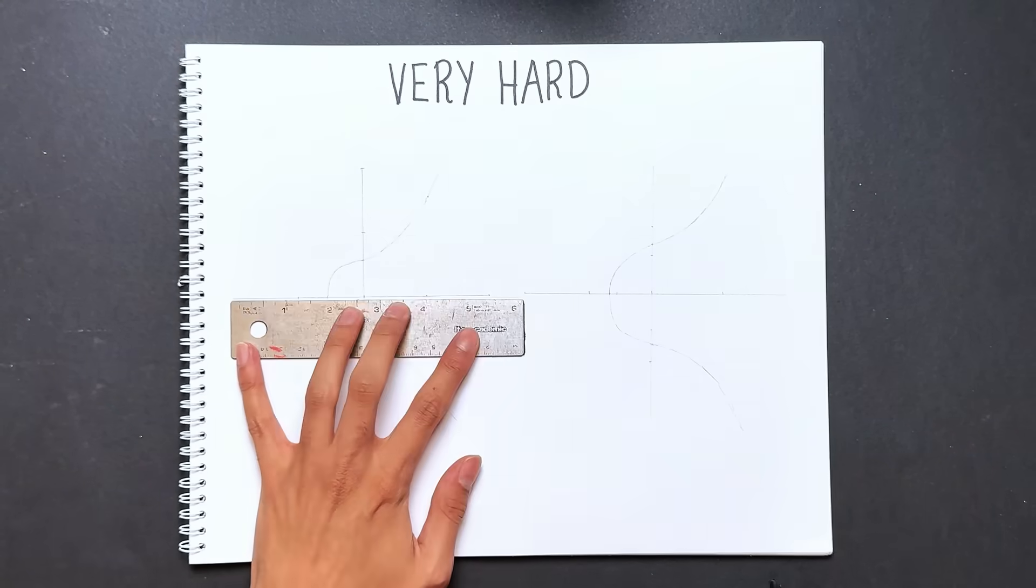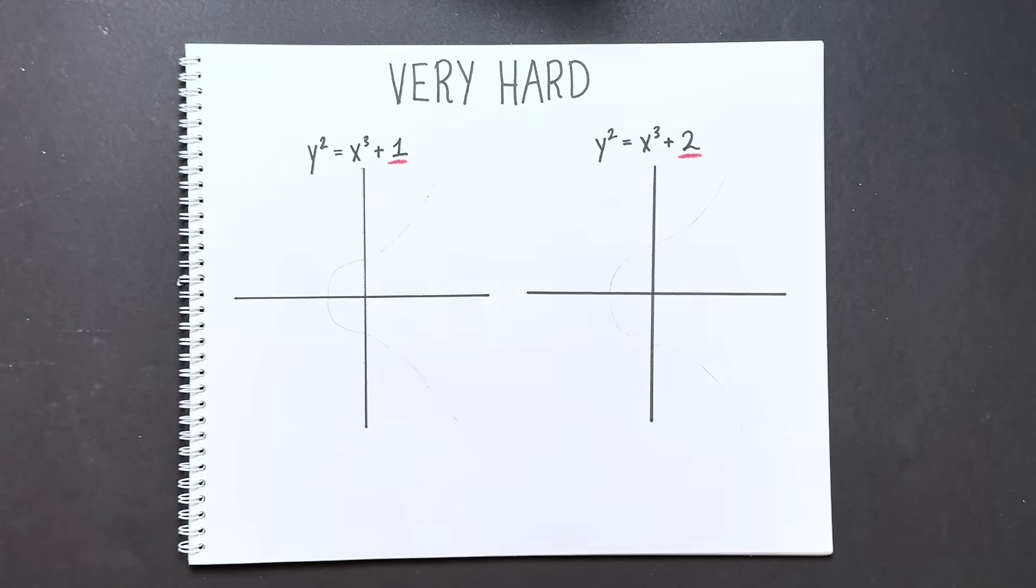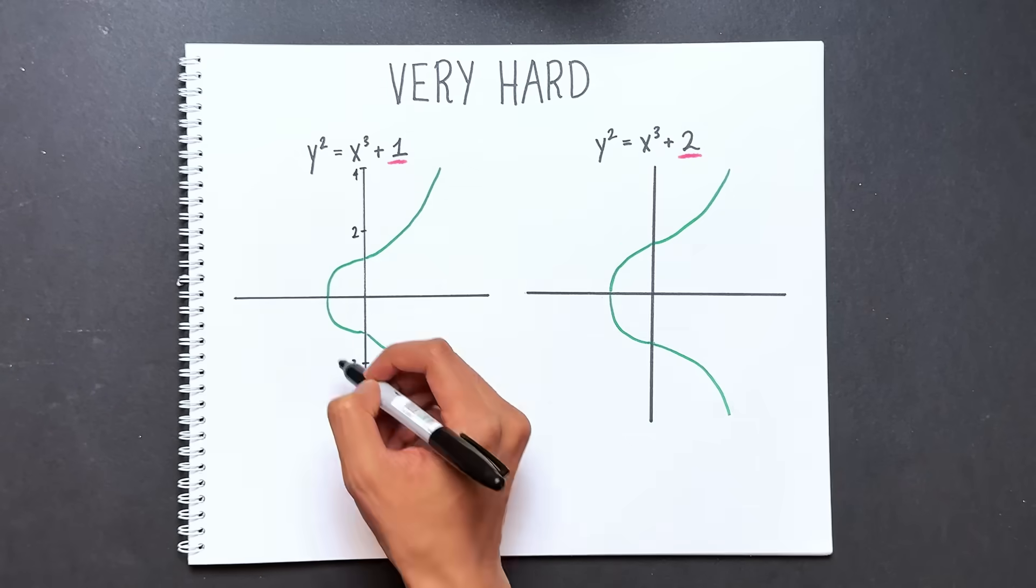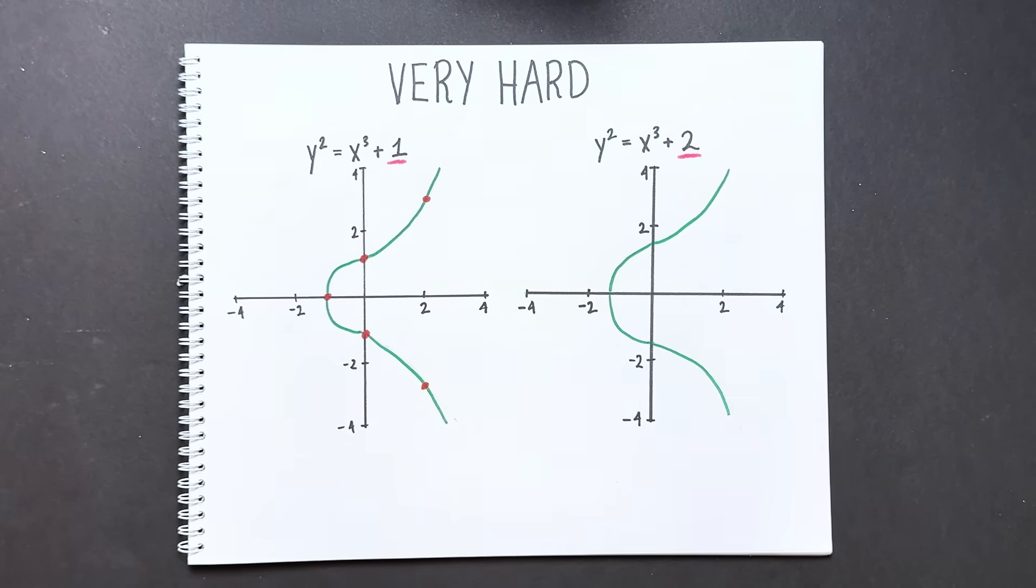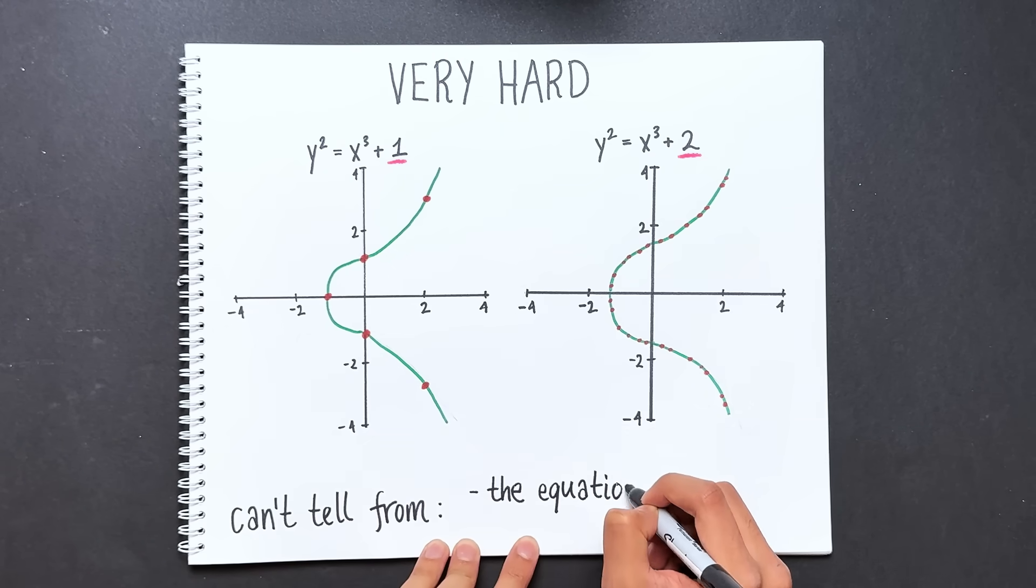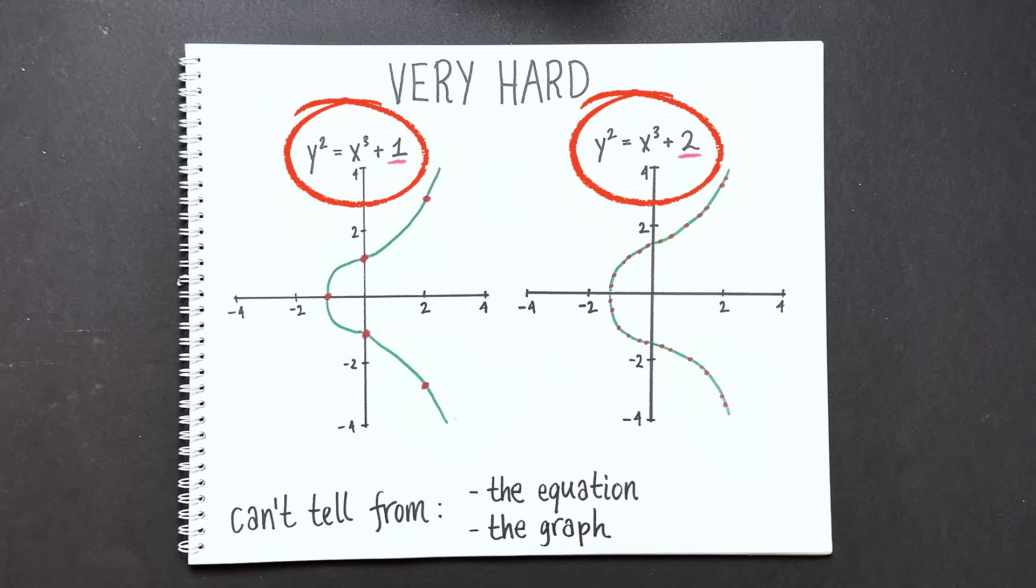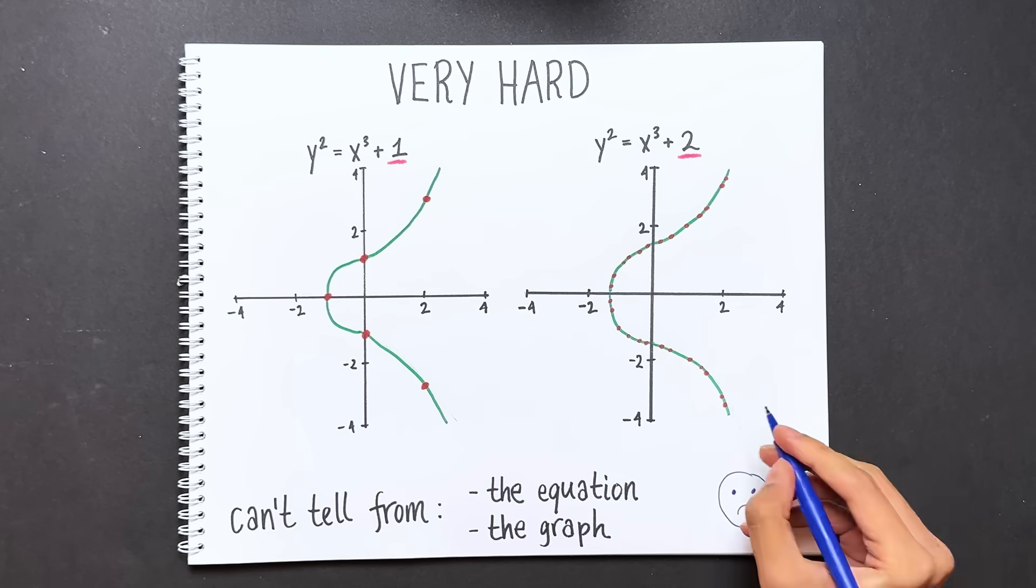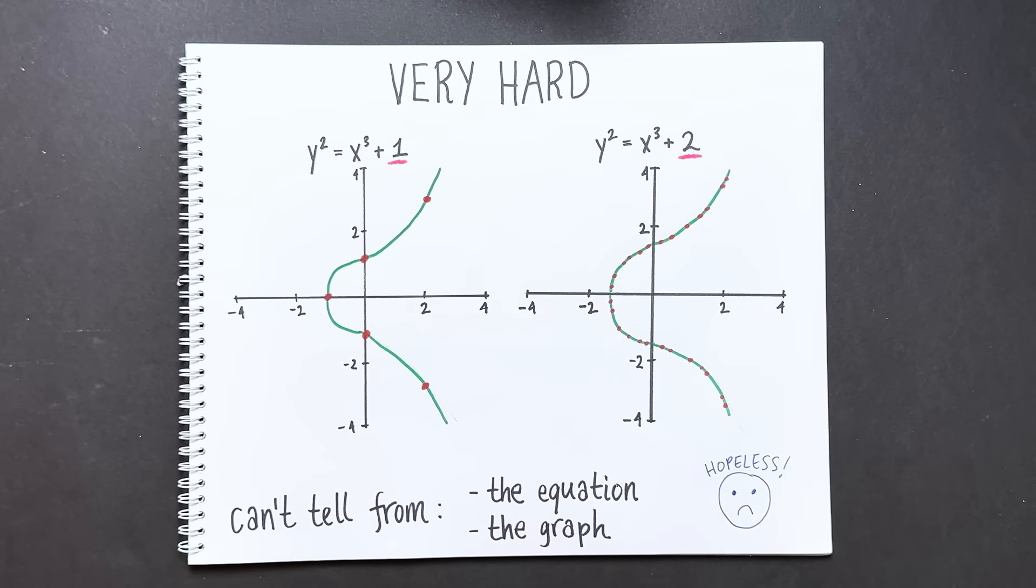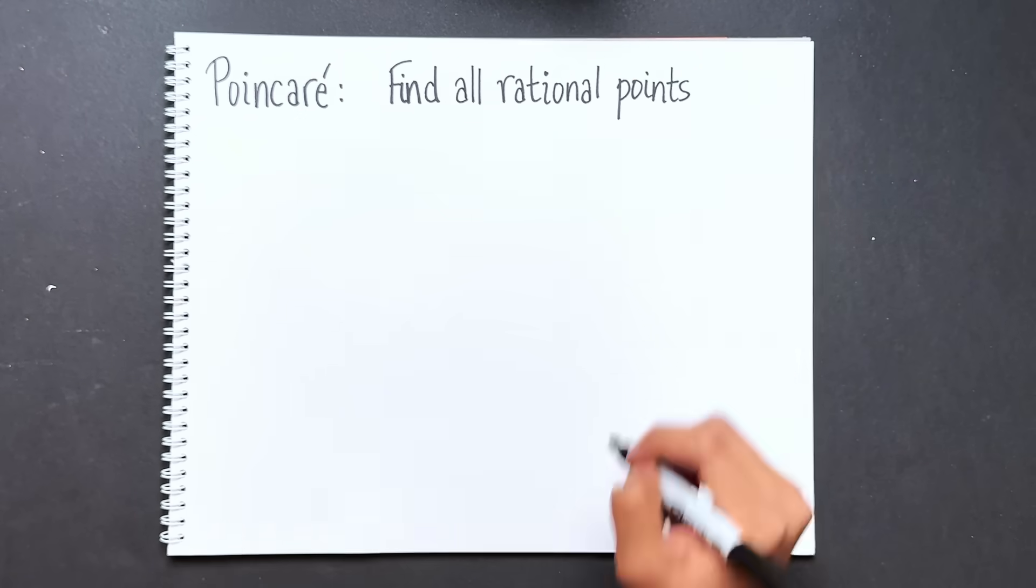Why is it so hard to find the rational points on these curves? Here are two examples of elliptic curves. The only difference is that there's a 1 on the left equation and a 2 on the right. The curve on the left has finitely many rational points, which I'm drawing in red, but the curve on the right has infinitely many. This tells us two things: you can't tell from the equation how many rational points a curve has because the equations look almost the same, and you also can't tell by looking at the graph. The number of rational points depends very sensitively and mysteriously on the exact numbers in the equation.